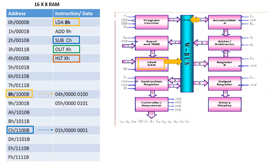The data at address 04H is located in RAM and sent via the W bus to accumulator A. So accumulator A now holds 04H. Next, address location 1H contains the instruction ADD 9H, which goes to the 16-to-8 RAM to find location 9H, where the data 05H is stored.